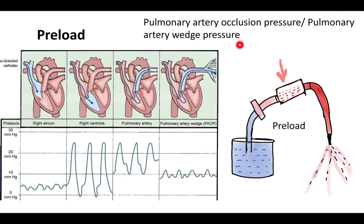The pulmonary artery occlusion pressure, or pulmonary artery wedge pressure, is used to understand preload. We advance a central line — a pulmonary artery catheter — from the right atrium, where we get a right atrial tracing, into the right ventricle for a right ventricular pressure tracing, then into the pulmonary artery for a pulmonary artery pressure tracing.